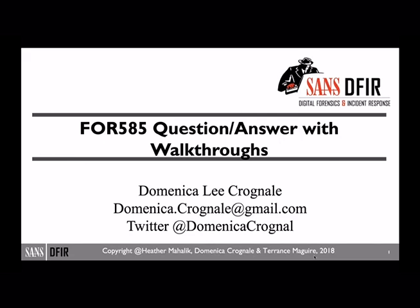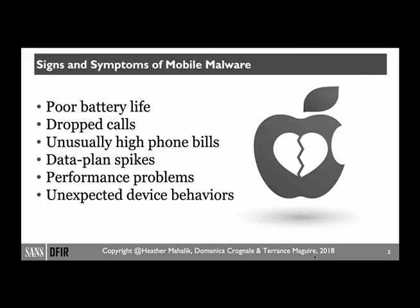If you find yourself as the phone person in your shop or wherever you work, you may have been confronted with the dreaded question: I think my phone has malware on it. Can you tell me if it does or not? Some of the common themes when people believe their phone has been infected are things like poor battery life, dropped calls, maybe an unusually high phone bill or data plan spike. They also may be experiencing some performance problems or just really unexpected behaviors. So how are you going to be able to tell if the device has malware in the first place?